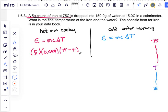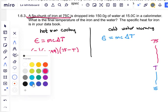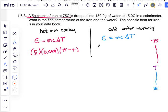That's the energy that comes out of the hot piece of iron. On the other side, the mass of the water is 150 grams. Water specific heat is well known to us and the temperature change now is going to be T minus 15.